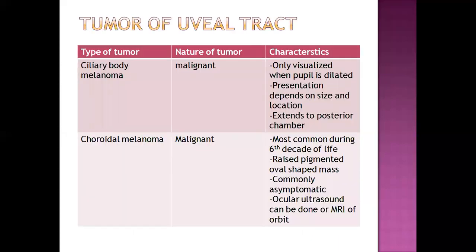Next is tumor of the uveal tract. There are two kinds: ciliary body melanoma and choroidal melanoma, both of which can be malignant. Ciliary body melanoma is visualized when the pupil is dilated, allowing the space to widen so it can be seen from outside. Presentation depends on size and location, and it extends to the posterior chamber. Choroidal melanoma is most common during the sixth decade of life. There is a raised pigmented oval-shaped mass. It is commonly asymptomatic but gradually develops symptoms.